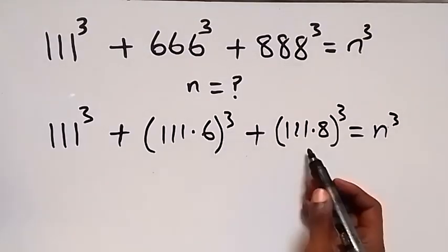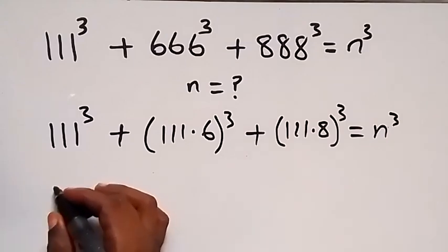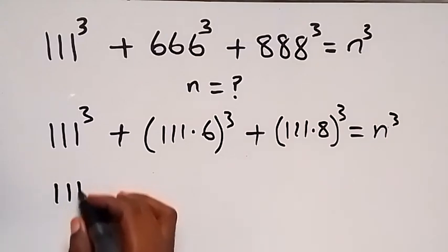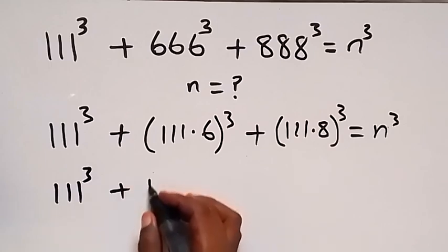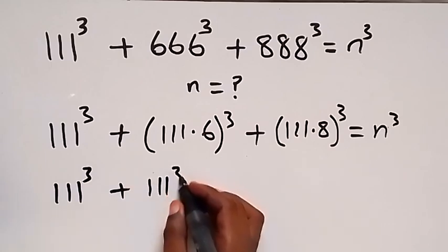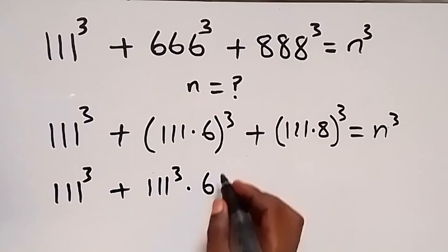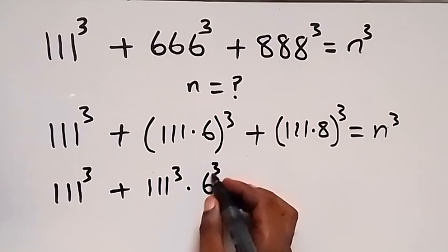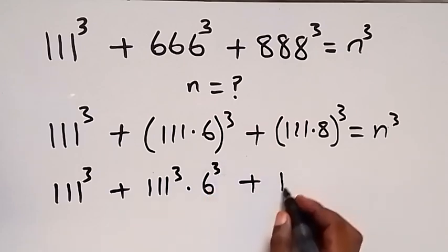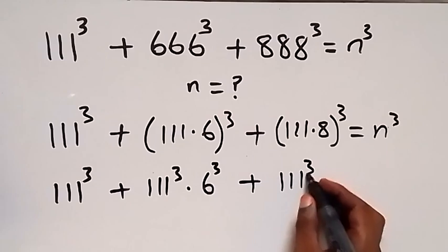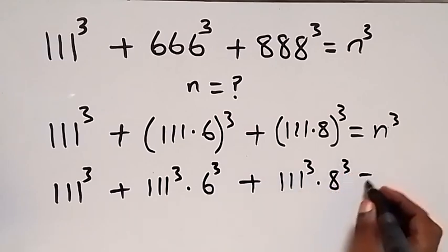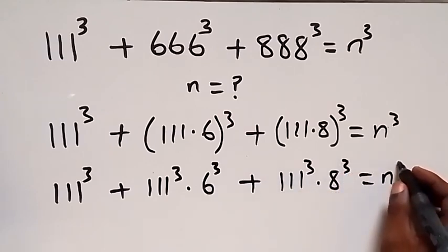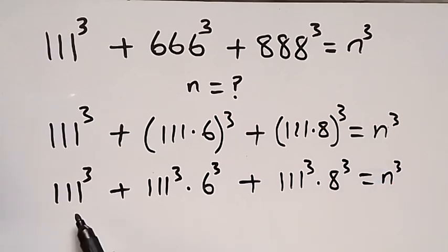From here, this part will affect these two numbers, and this can be written again as 111 raised to power 3, plus here we have 111 raised to power 3 times 6 raised to power 3, plus here as well 111 raised to power 3 times 8 raised to power 3, equals n raised to power 3.